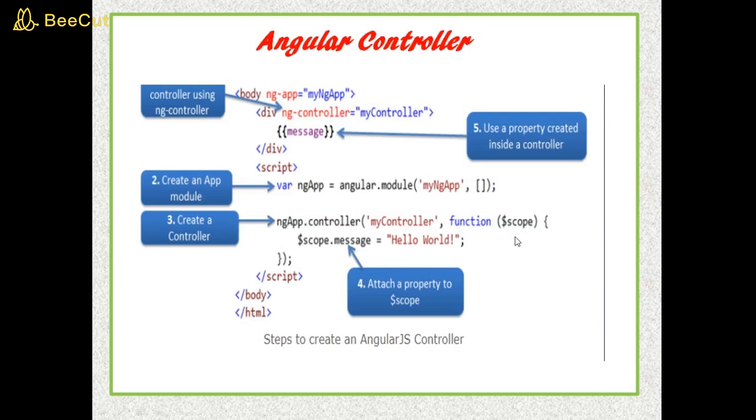You can attach properties and methods to the $scope object inside a controller function, which in turn will add or update the data and attach behaviors to HTML elements. The $scope object is a glue between the controller and HTML.